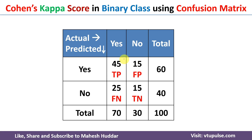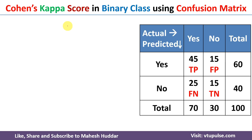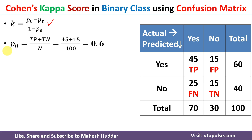Once you understand the confusion matrix, we calculate the Cohen's kappa score using the equation: k = (p0 - pe) / (1 - pe). Here, p0 is (TP + TN) / N — the agreement between the actual and predicted classes. We know TP is 45 and TN is 15, divided by the total of 100 examples. So p0 = (45 + 15) / 100 = 0.6.